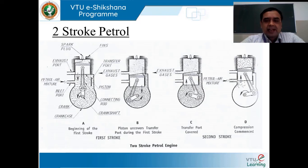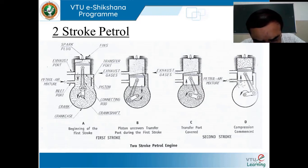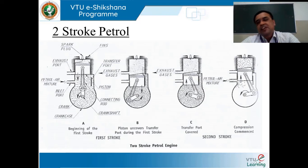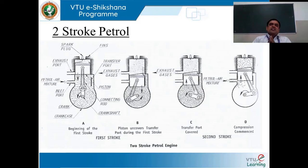In the schematic, the interpretation has been clearly made. The alphabets A and B mark the beginning of the first stroke, and alphabet D designates piston uncovering the transfer port during the first stroke. When we see the alphabets C and D, the transfer port is clearly covered and D emphasizes that compression has commenced.